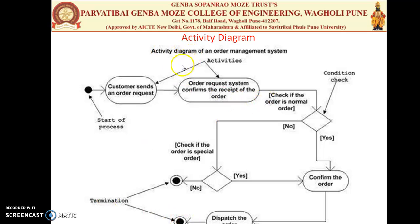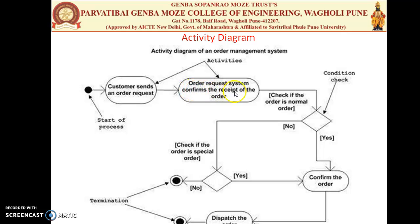Now let's look at the first activity diagram. The start of the process is denoted by a solid dot with an arrow pointing to the particular activity. The first activity is the customer sends the order request. An arrow then leads to the second activity, where the order request system confirms the receipt of the order.